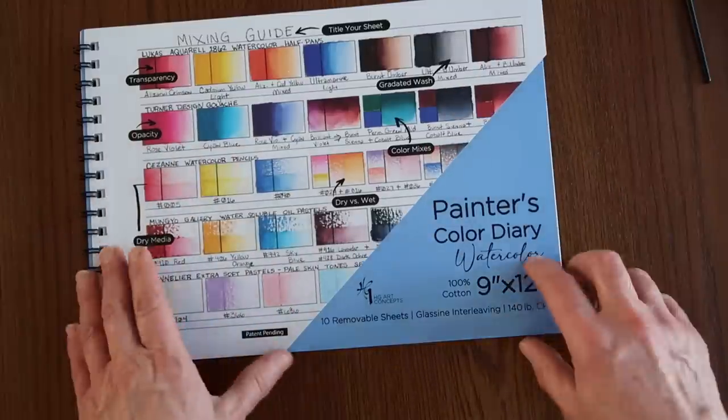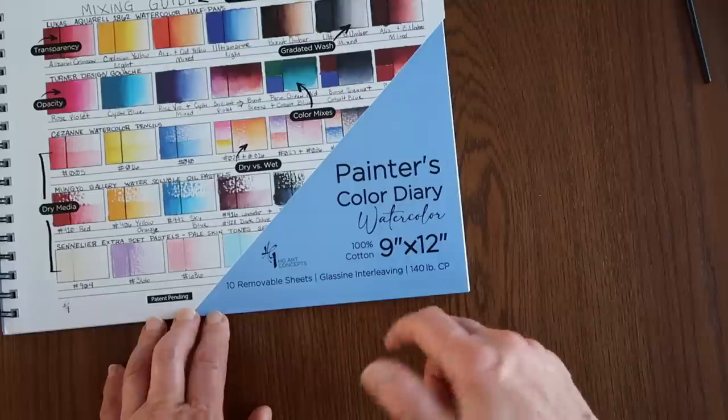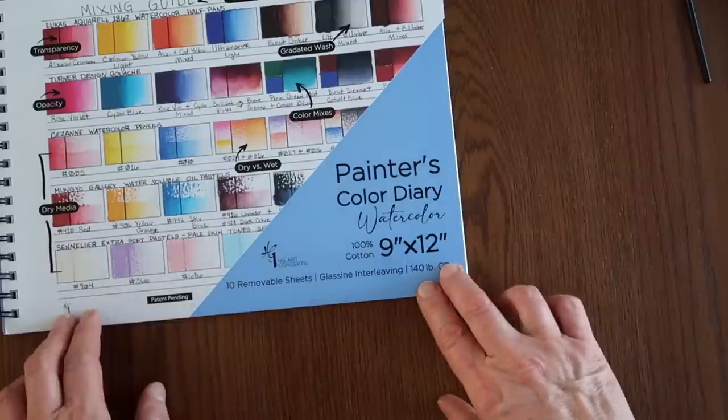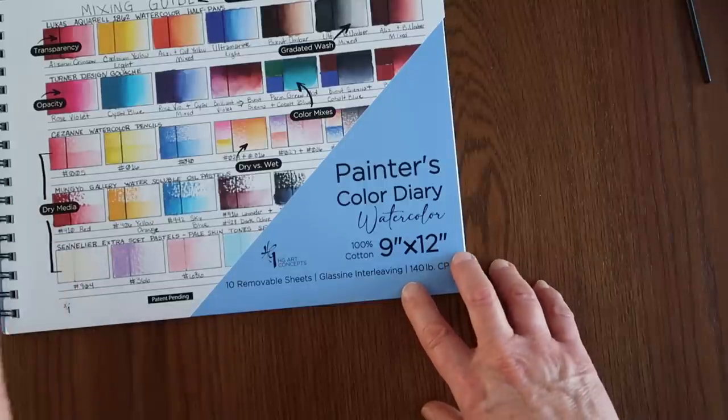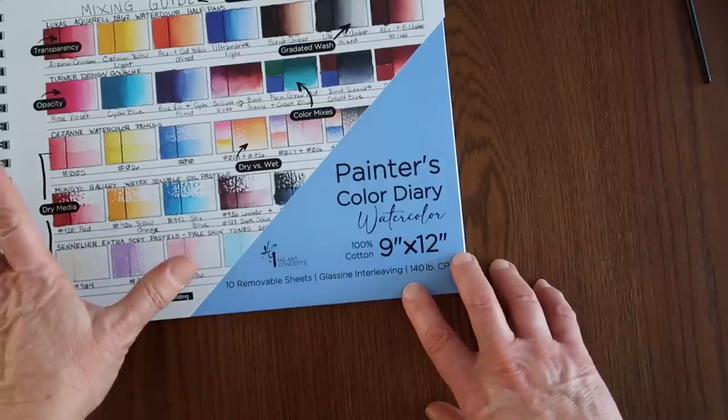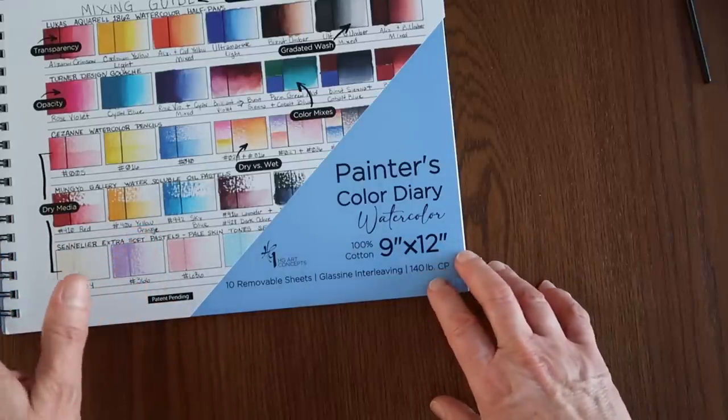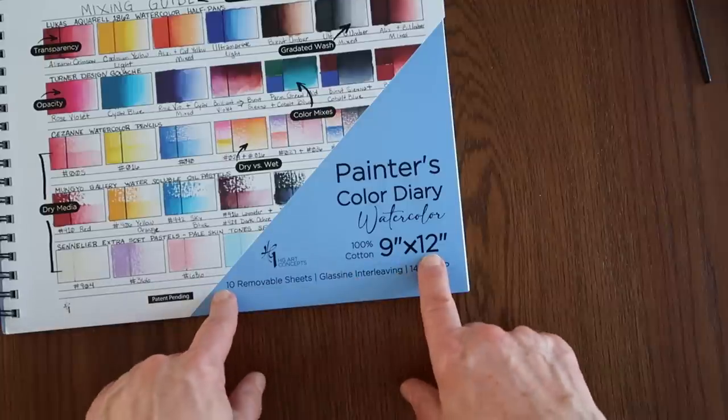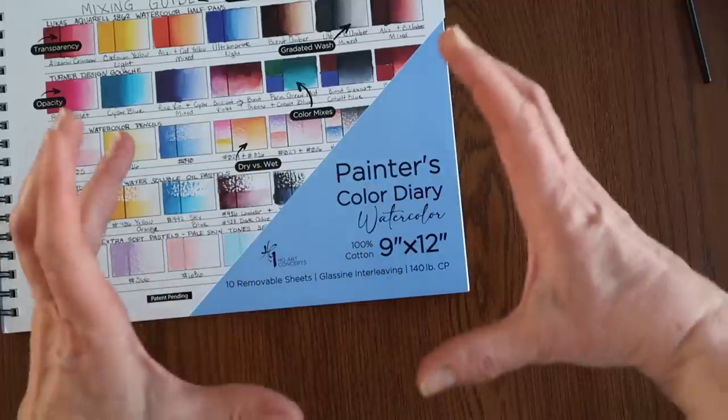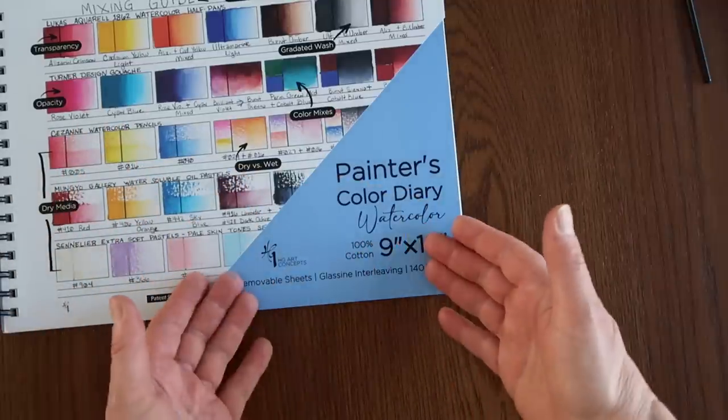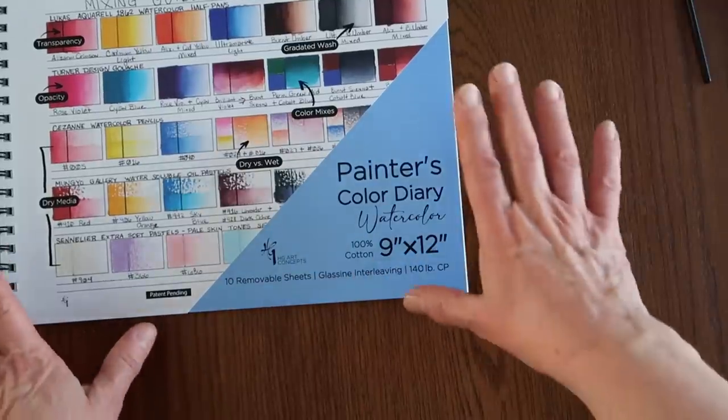But it's the meat of the item that we're going to get into, not what the cover looks like. The second thing I did notice is this is 100% cotton, which is right on. That's exactly what we want. We want to swatch on good quality paper to give us an idea of the maximum value that our paints can give us, the maximum qualities that our paints can give us.